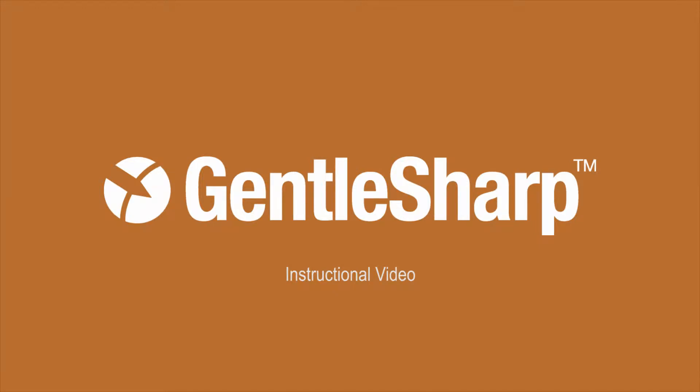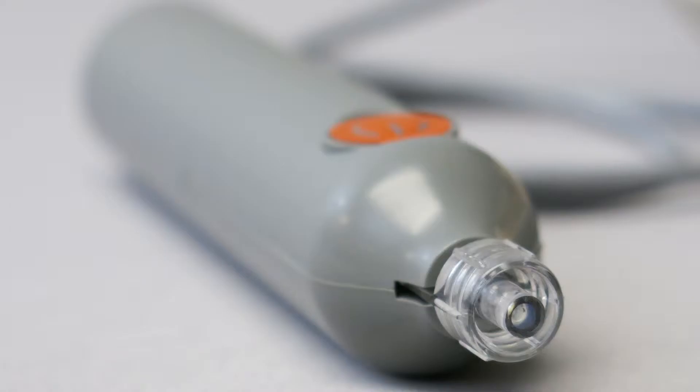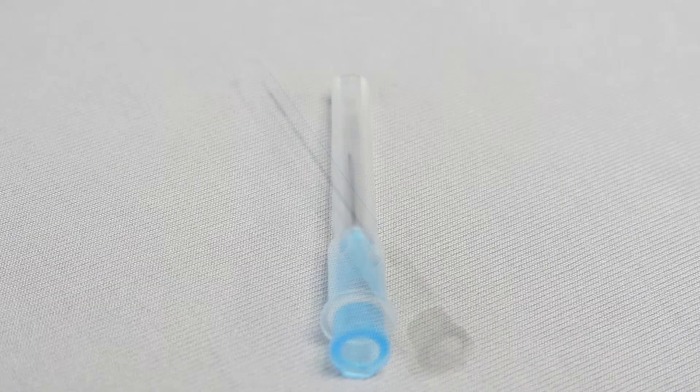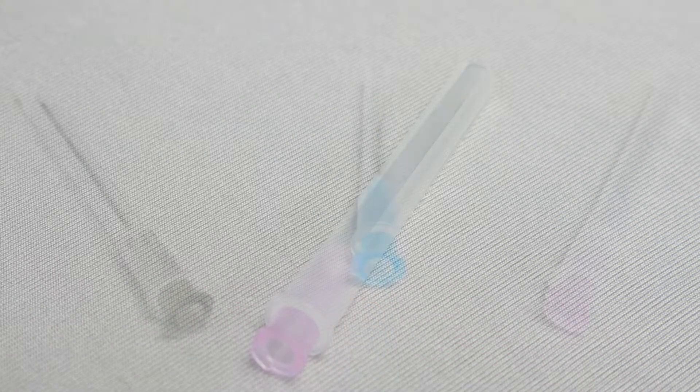Hello and welcome to the GentleSharp training video. GentleSharp is used to perform vascular punctures for the purpose of obtaining blood samples in rodents. The device consists of a handpiece connected to a control box and is compatible with standard Luer lock and Luer slip needles or lancets, referred to as sharps in the video, which are sold separately.